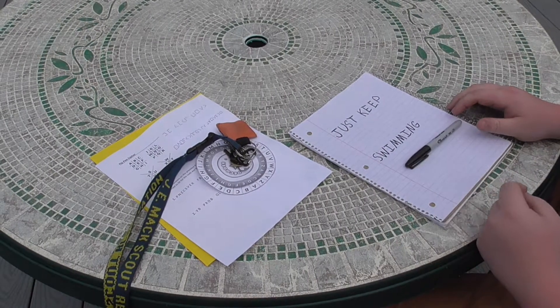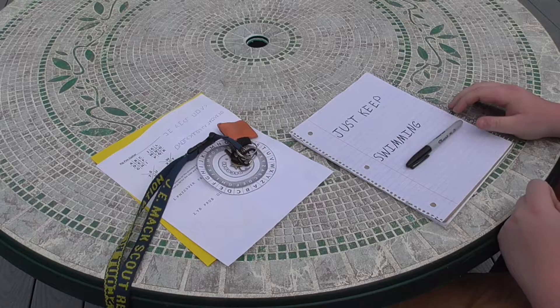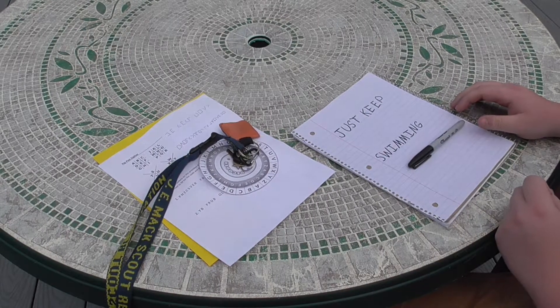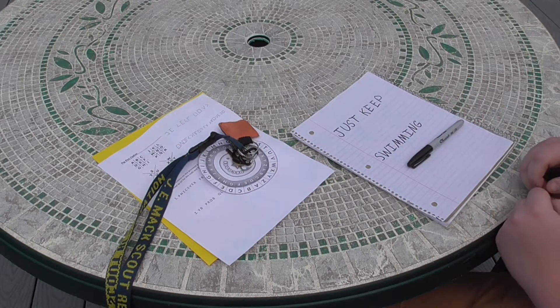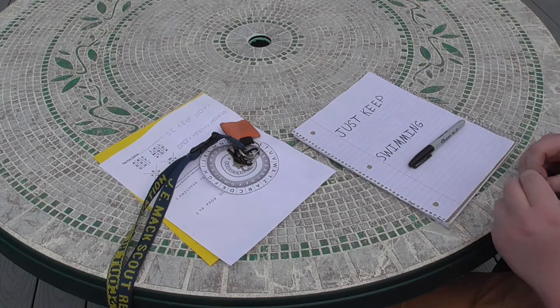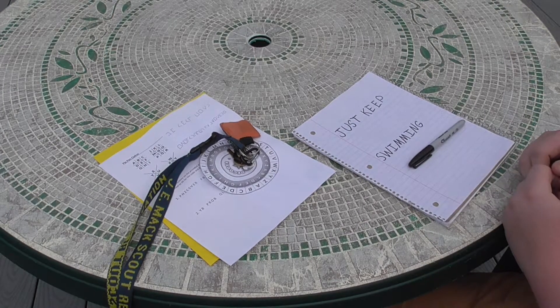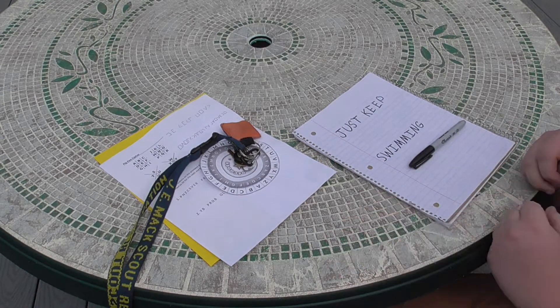What's up code breakers, we're back out here with Garfunkel deciphering a cipher. This one is called the date shift cipher. It's a little complicated at first, but once you get the hang of it, it can become real easy.